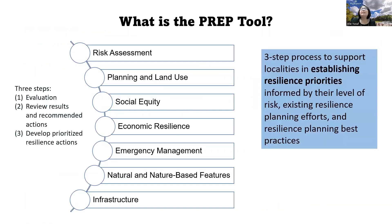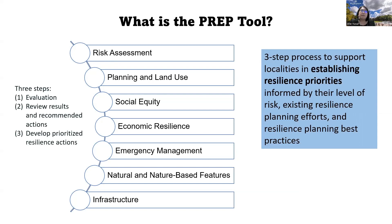The PREP tool is a three-step process to support localities in establishing their resilience priorities in a way that is informed by their level of risk, that also takes into consideration their existing resilience planning efforts, and also recognizes resilience planning best practices. Looking at that level of risk and existing resilience planning efforts, the PREP tool walks localities through a series of seven sections that look at risk assessment, planning and land use, social equity, economic resilience, emergency management, natural and nature-based features, and infrastructure.